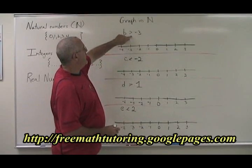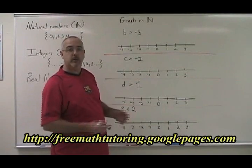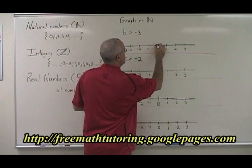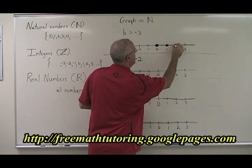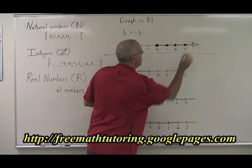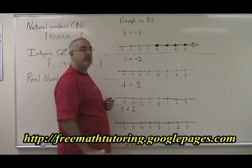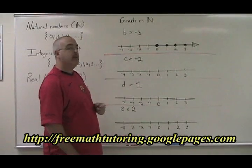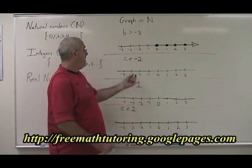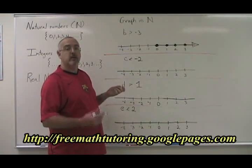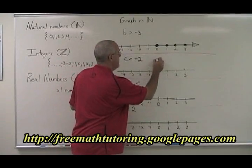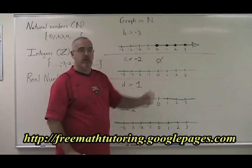b greater than negative three: all natural numbers are greater than negative three. So I have zero, one, two, three, and I continue on forever in the positive direction. c less than negative two: there are no natural numbers that are less than negative two, because there are no negative natural numbers. So I have an empty set answer and an empty number line.